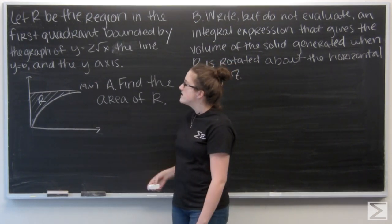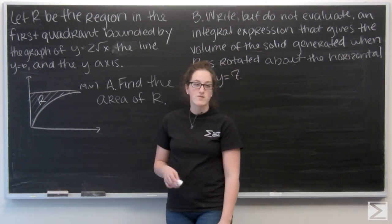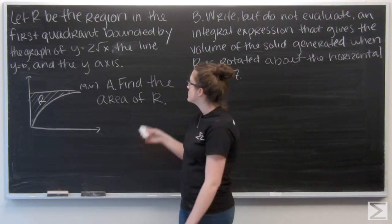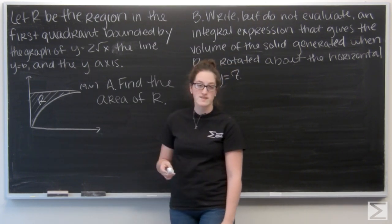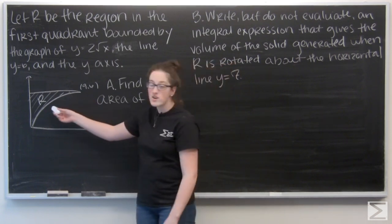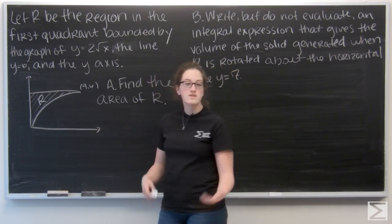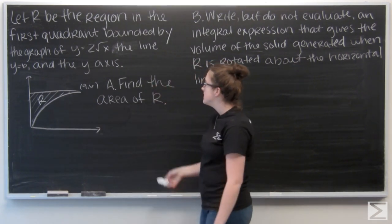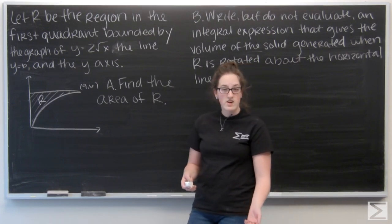Multiple parts, but first we're given a region. And it's in the first quadrant bounded by the graph of y equals 2 square root of x, y equals 6, and the y-axis. I've already got it drawn right here. And in the question, that picture is given to us.